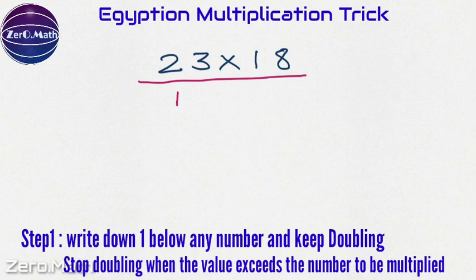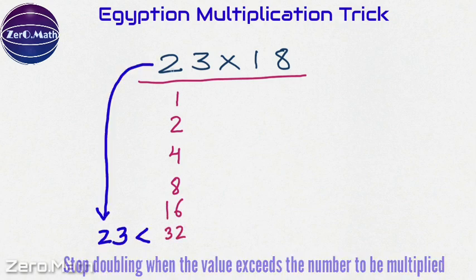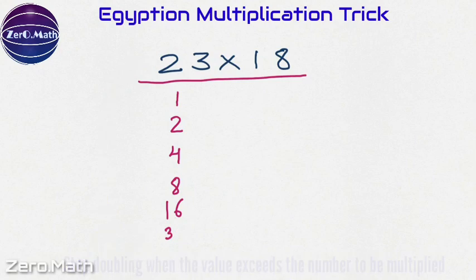Let us start doubling. 1 into 2 is 2, 2 into 2 is 4, 4 into 2 is 8, 8 into 2 is 16, and 16 into 2 is 32. However, if you note, 32 is greater than 23, hence no need to write 32 over here.